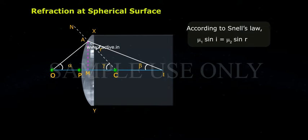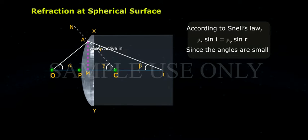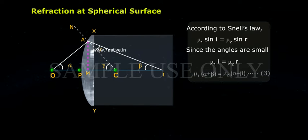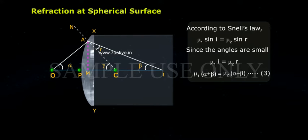According to Snell's law, Mu1 sine I equals Mu2 sine R. Since the angles are small, Mu1 I equals Mu2 R. Therefore, Mu1 into (Alpha plus Gamma) equals Mu2 into (Gamma minus Beta) — equation 3.